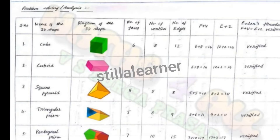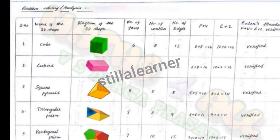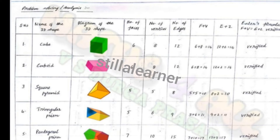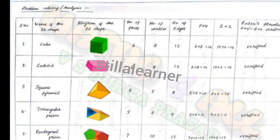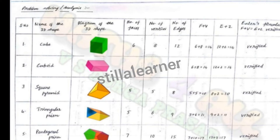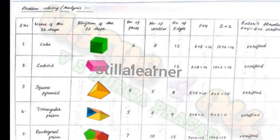The first shape is a cube: 6 faces, 8 vertices, and 12 edges. Cuboid: 6 faces, 8 vertices, and 12 edges. Square pyramid: 5 faces, 5 vertices, and 8 edges. Triangular prism: 5 faces, 6 vertices, and 9 edges. Pentagonal prism: 7 faces, 10 vertices, and 15 edges. All are verified.